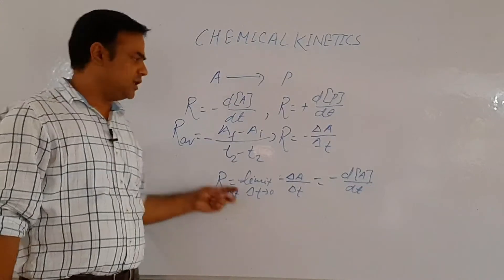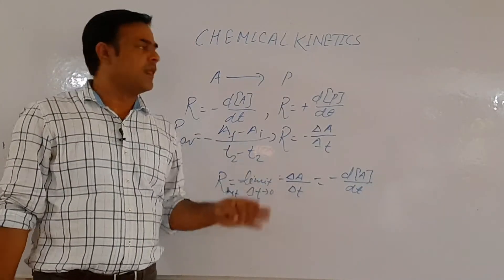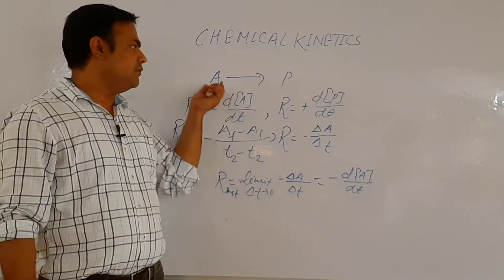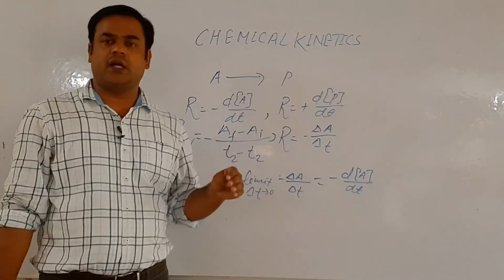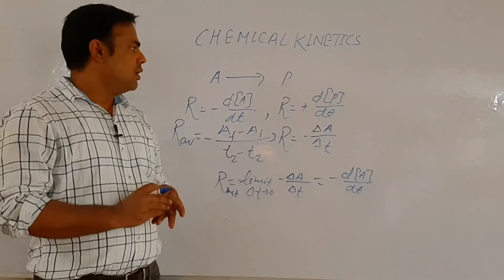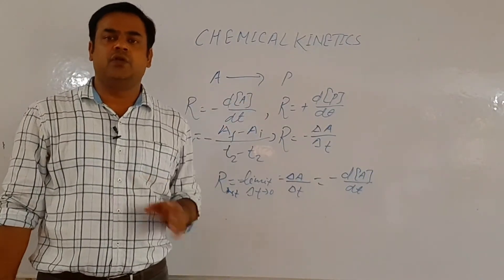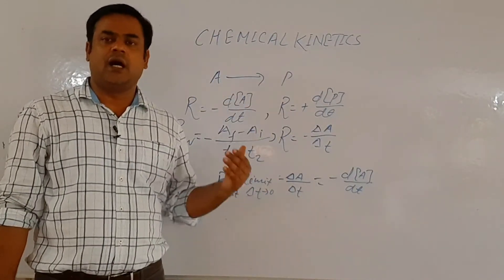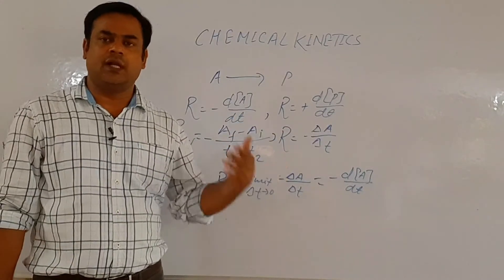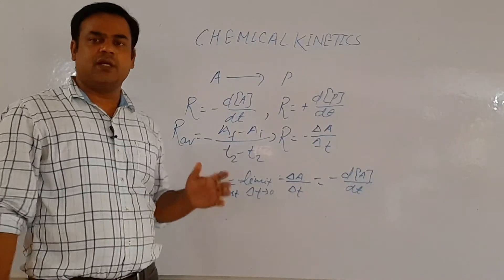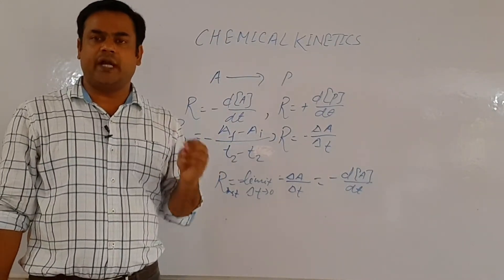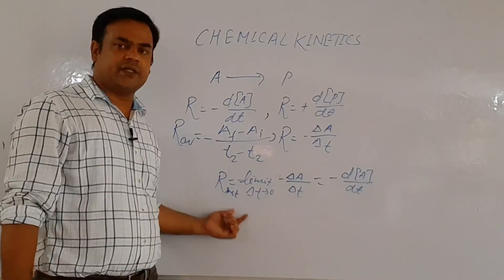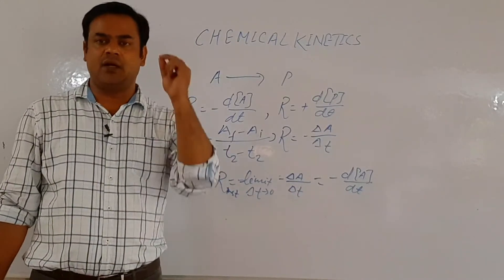The instantaneous rate is the exact rate of reaction, while average rate is not exact. Whenever a reaction starts, reactant converts into product, concentration of A decreases and concentration of product increases over time. But the rate of reaction is not uniform throughout — in the beginning it may be fast, then it may become slow. Average rate gives us an idea about the rate over a particular time interval, while instantaneous rate gives us the rate at a particular instant.